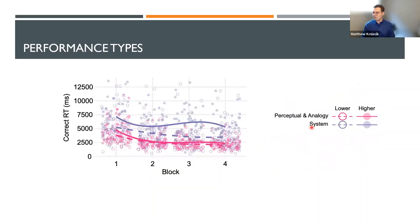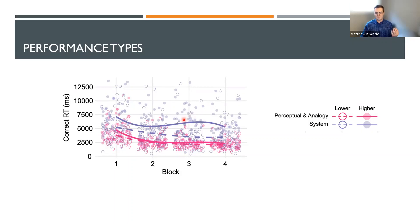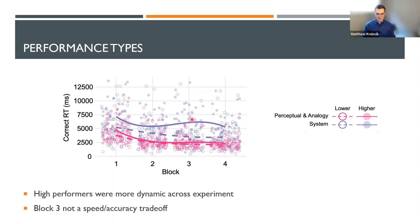For reaction time, there's a cubic effect of time for higher performers, further supporting more dynamic responding. Their reaction time gets faster, then slows down at block three, then improves again at block four. This is why it's probably not a speed-accuracy trade-off: block three shows both worse performance and slower reaction time simultaneously. High performers seem to be trying different things out, and this again suggests that speed-accuracy trade-off is not at play.